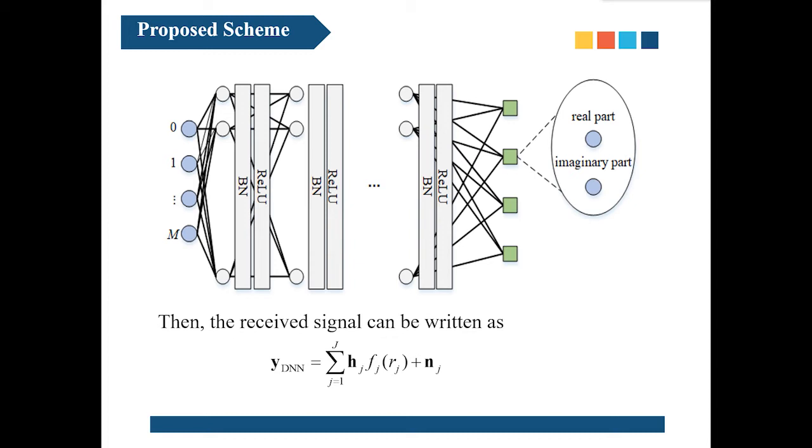Thus, there are two times K output nodes in the output layer. Each part corresponds to one node in the output layer of the unit. Then the received signal can be written.